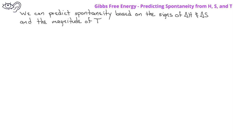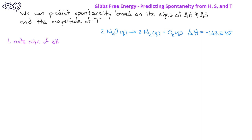Let's see how this is done in a few different examples. Consider the reaction: 2 moles of N₂O gas react to produce 2 moles of N₂ gas and 1 mole of O₂ gas, with an enthalpy change of negative 163.2 kilojoules. The enthalpy change is negative. By examining the equation, we can predict that the entropy change will be positive because we have 2 moles of gas on the reactant side and it produces 3 moles of gas on the product side, leading to an increase or positive entropy change.